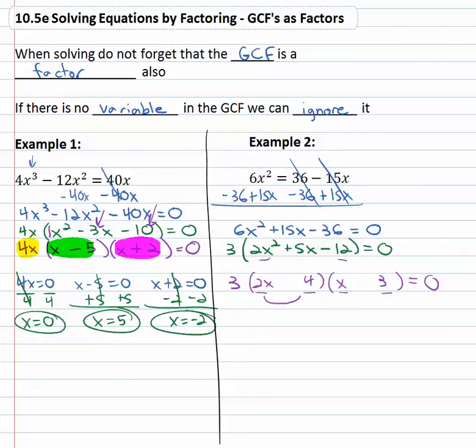Oh wait, four and three won't work because there's a GCF in that binomial. Those are both divisible by two. So let's switch them, three and four.